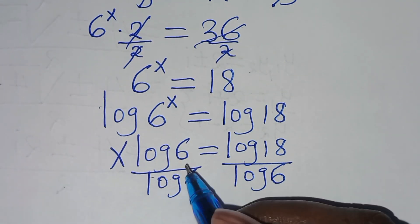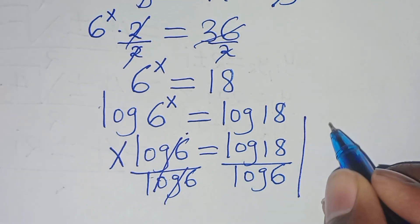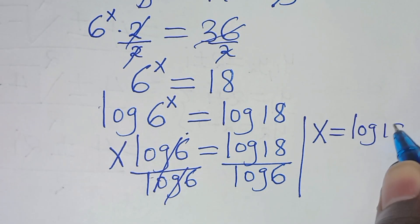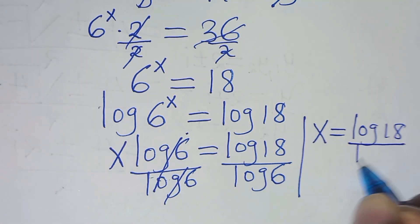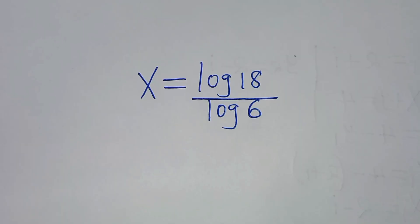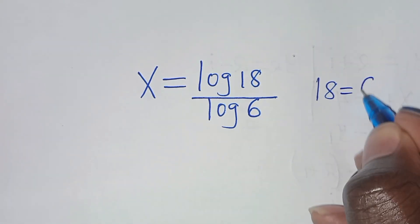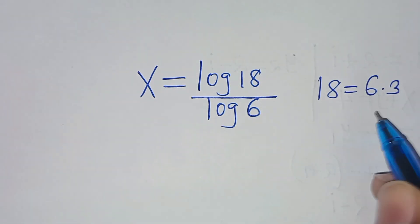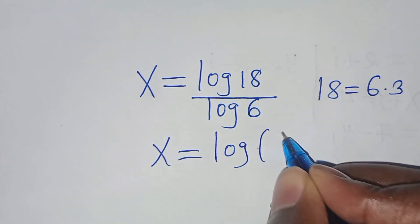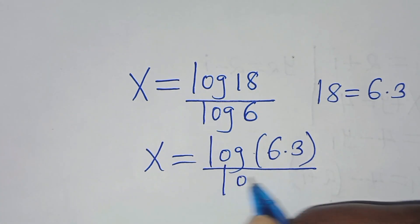The next step is to simplify. We can express 18 as 6 times 3. Let's substitute this, so that x is equal to log of 6 times 3, divided by log 6.